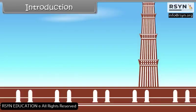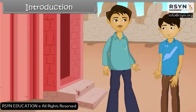Look son, this is Kutub Minar. You know how high it is? I will tell you — it is 72.5 meters tall. How can we find the height of any building? We can find its height using trigonometry.